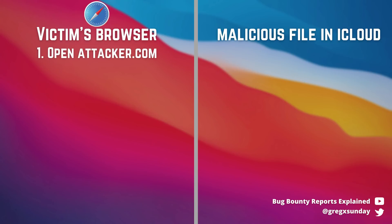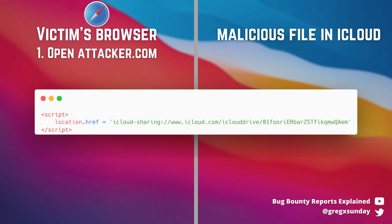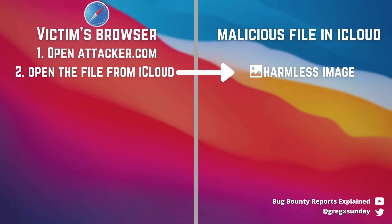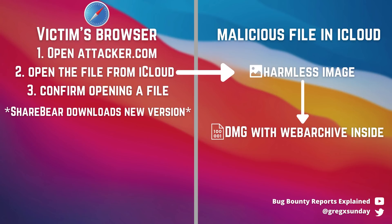First, you trick the victim into visiting your website. This website contains JavaScript code with a link to a harmless image shared over iCloud. The user has to confirm the prompt about opening the file — this is the last piece of user interaction needed. Then you modify the contents of the image to a DMG file which contains the web archive inside. In a real attack scenario, you'd probably need scripts to do this automatically.